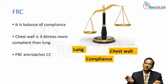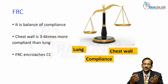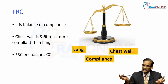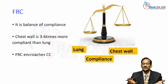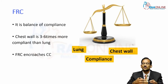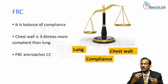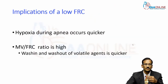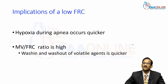The lower FRC tends to encroach the closing capacity in a small child. During normal respiration, a significant percentage of the alveoli could be closed in a small child, which basically means they will be more susceptible to hypoxia when you have an apneic episode. So they tend to desaturate quicker.